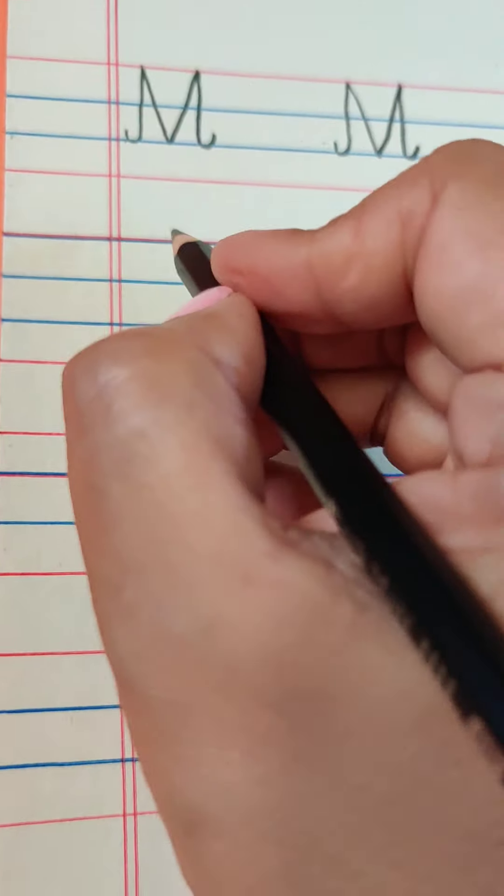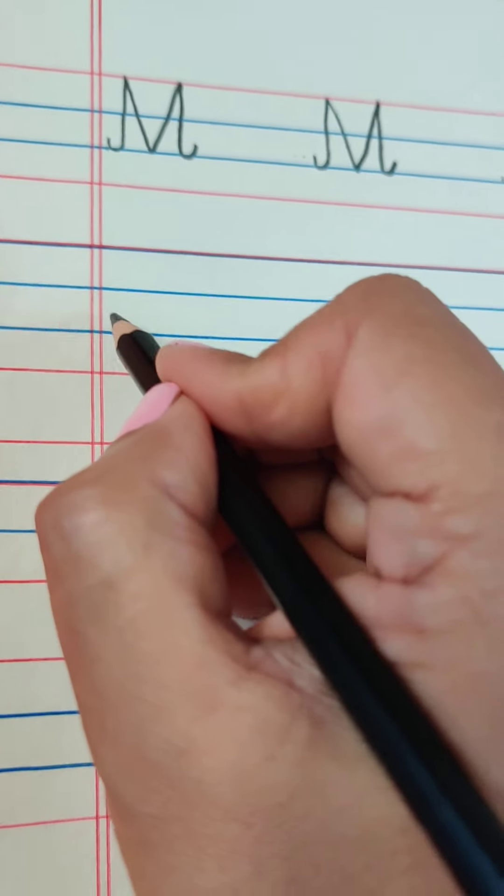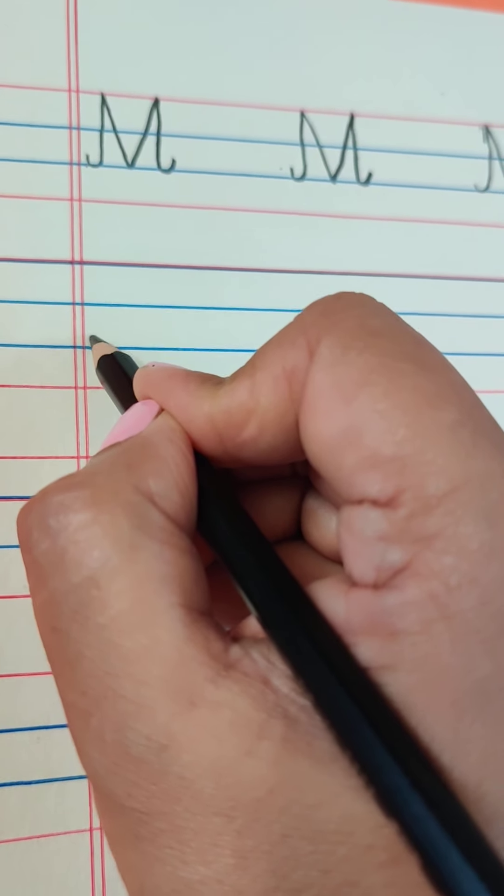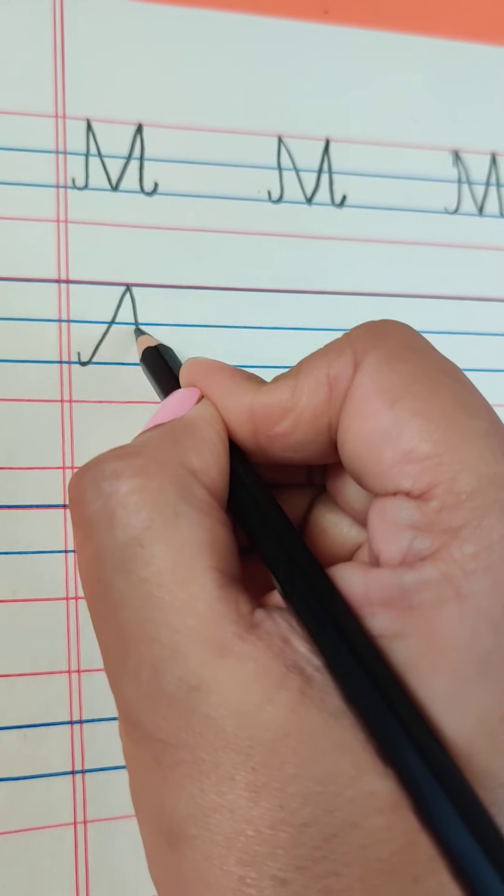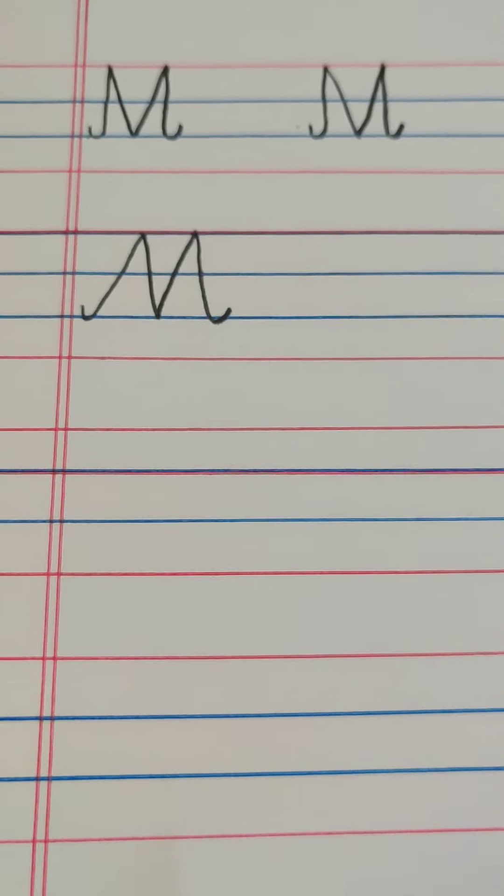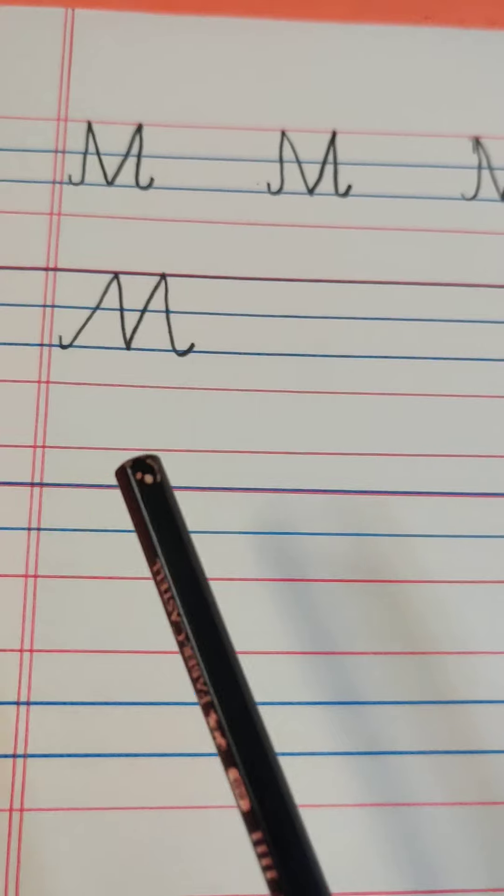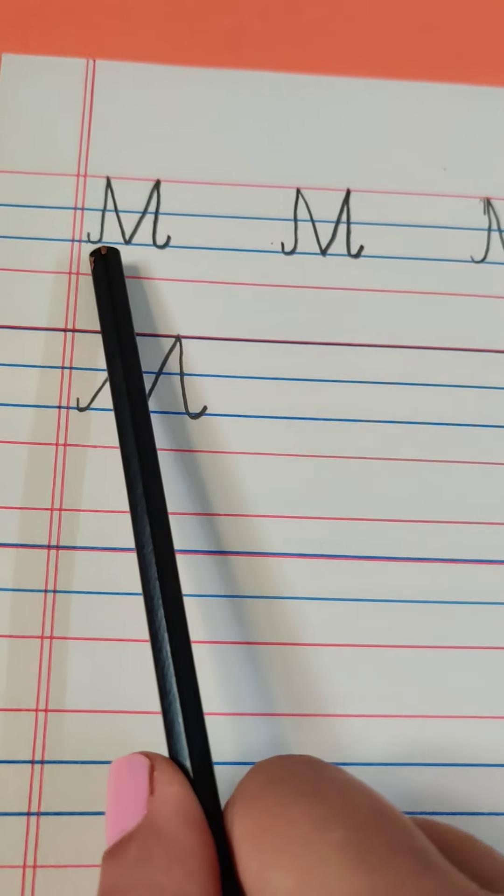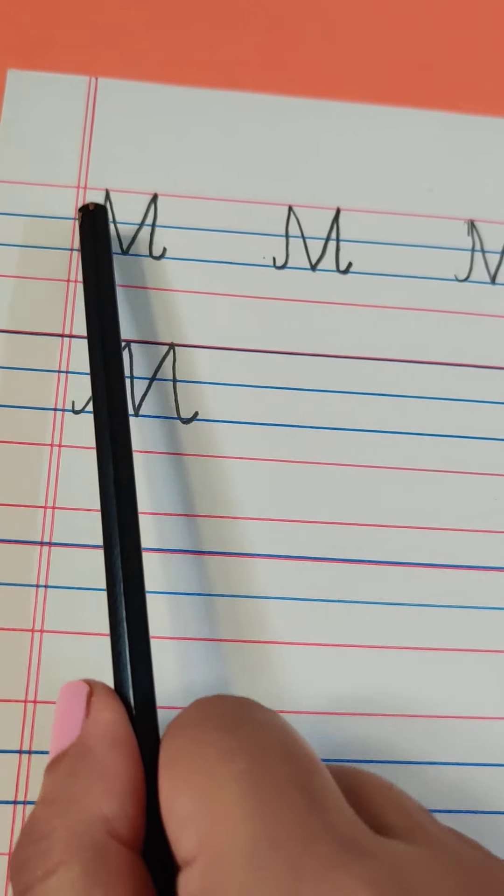So the possible mistakes are, some children do not know how to go up straight, so they go slant, and your M will become like this. This is a very common mistake that many children make. So before starting, before making this, you will have to practice going up straight.